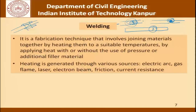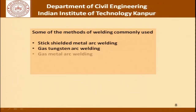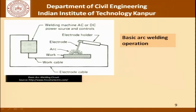This heating is generated through various sources: electric arc, gas flame, laser, electron beam, friction, current resistance, and so on. These different technologies all have their own pluses and minuses as far as heat application at the joint is concerned. Some of the methods of welding which are commonly used are stick shielded metal arc welding, gas tungsten arc welding, gas metal arc welding, flux cored arc welding, and electroslag welding. This is not a detailed class in welding — we will understand what the physics of the operation is and then move on to quality control issues.